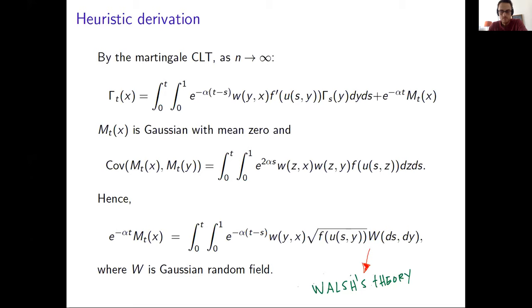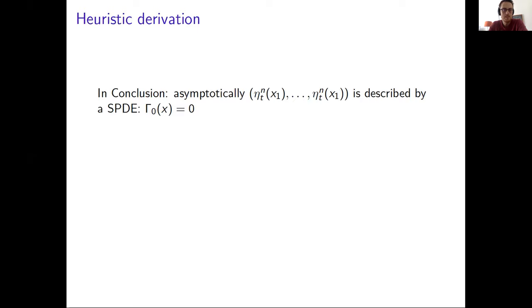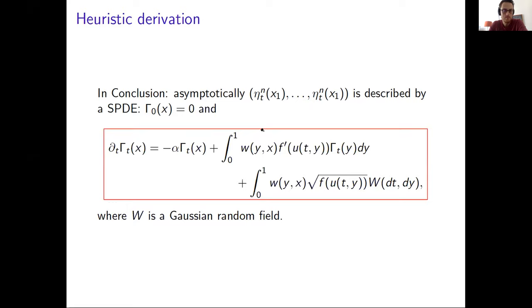So this term here is Gaussian with mean zero, and they are correlated. You can check that this is the correlation, and you see that the function W plays an important role here. And since this is Gaussian and correlated, you can rewrite after some work this term as an integral with respect to a Gaussian random field. And to make sense of this equation, of this object, and to make sense of this equation, we use the Walsh theory of stochastic integration.